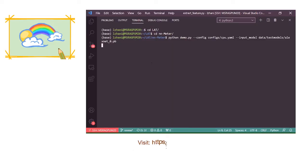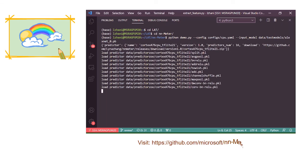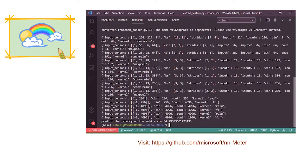NN Meter currently supports four types of edge platforms and achieves high prediction accuracy on a large dataset. At last, we will also open source NN Meter for other researchers and developers to build latency predictors for their own devices.